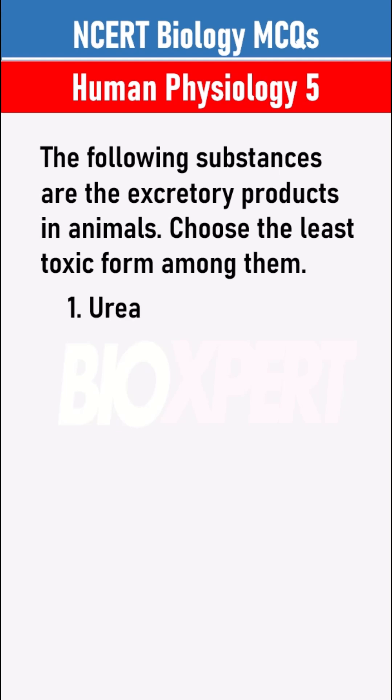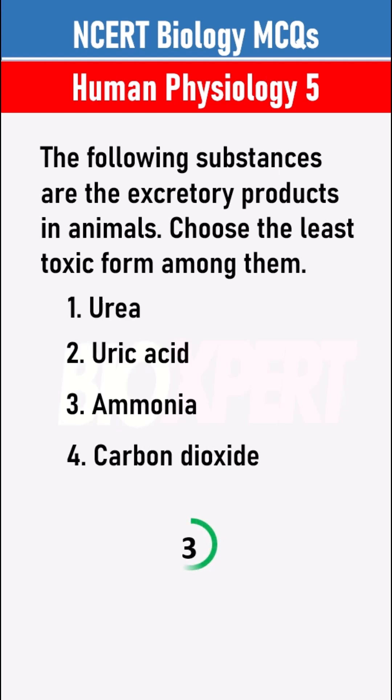The following substances are the excretory products in animals. Choose the least toxic form among them. Answer: Uric acid.